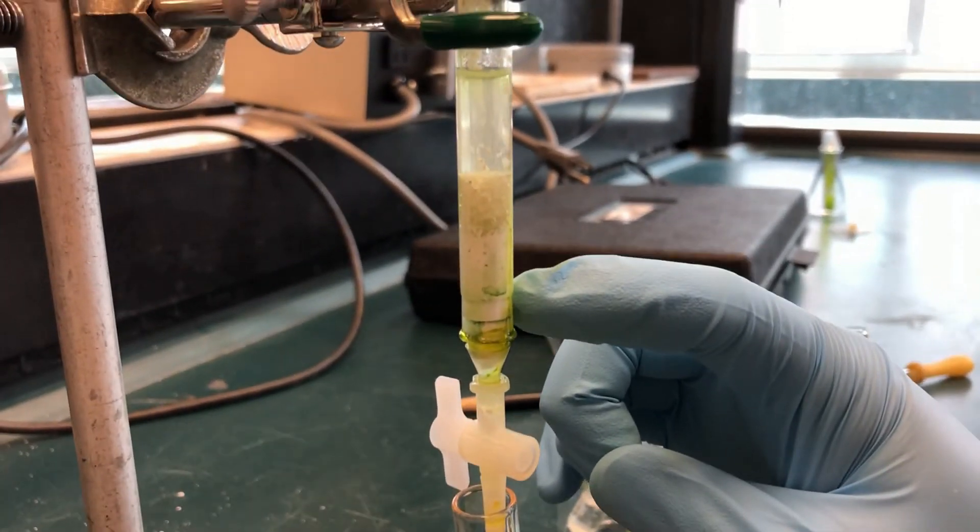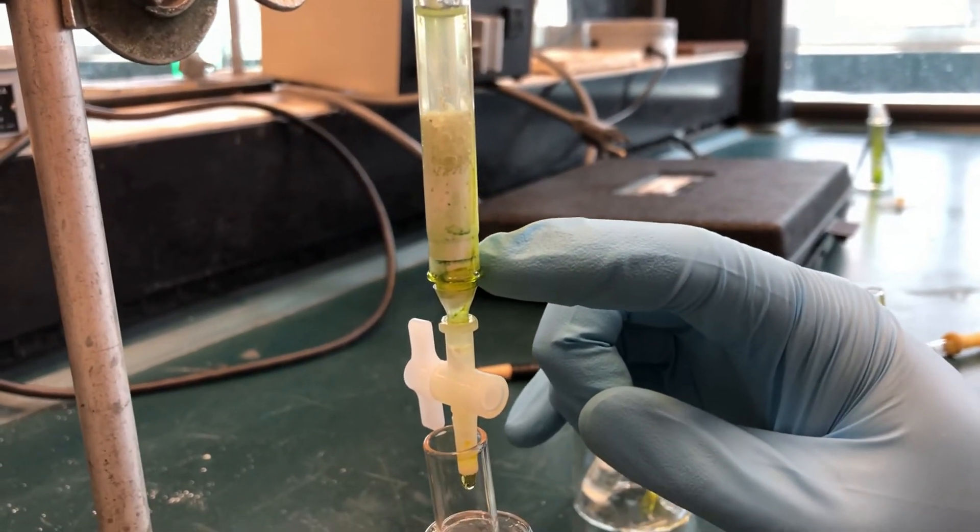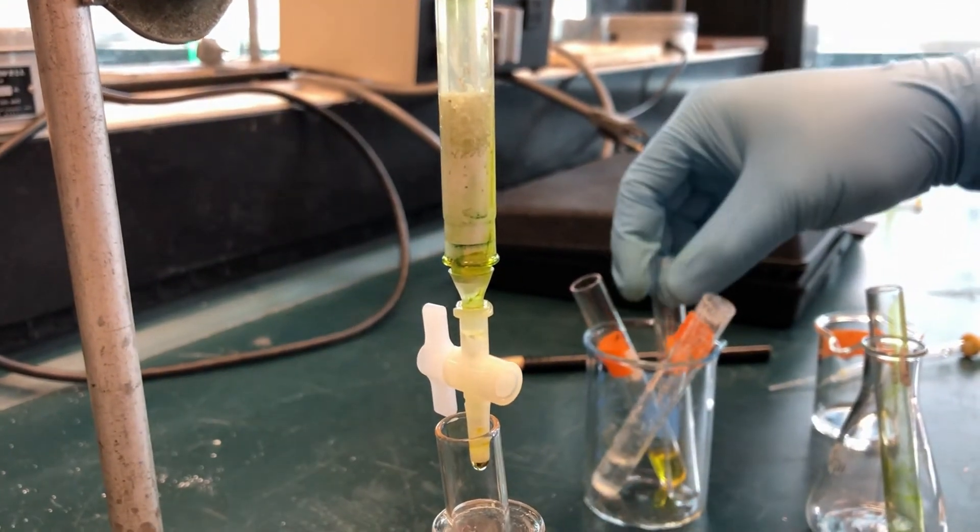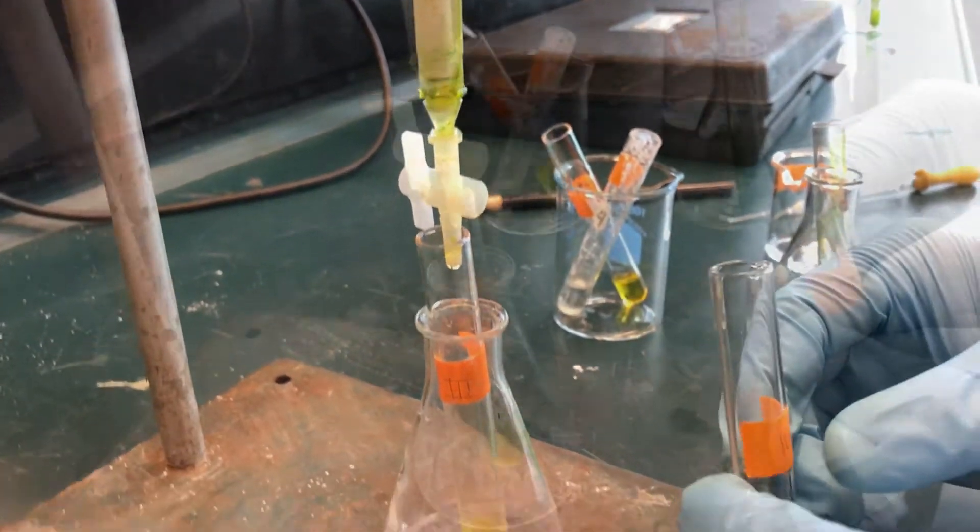Here we can see that the green is moving towards the bottom of the column. We switch collection tubes to collect the green pigment.